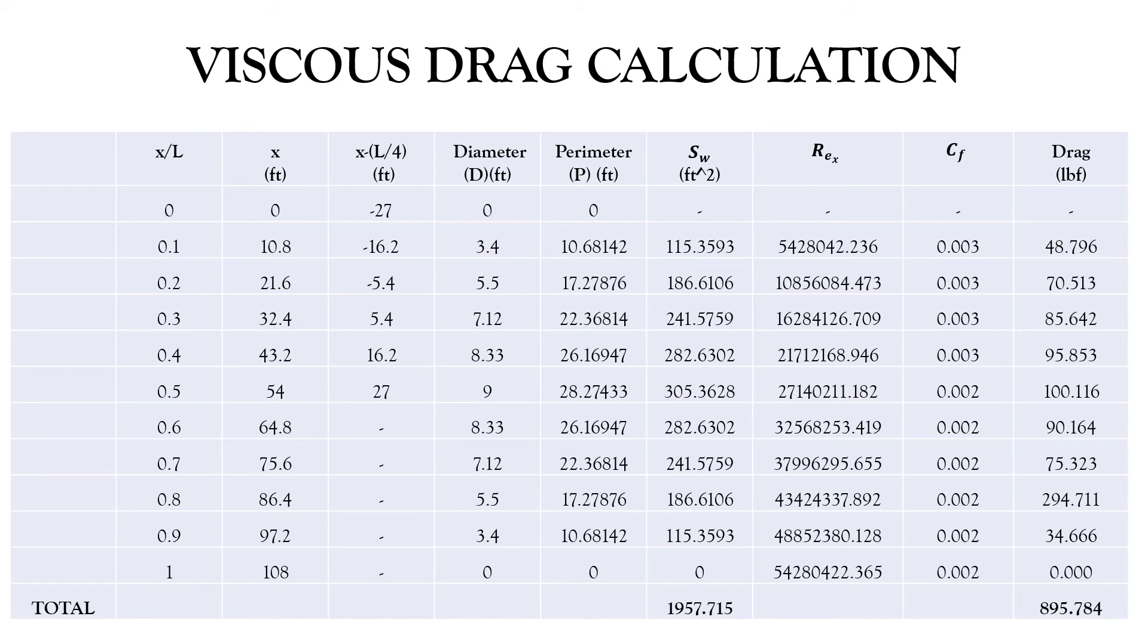Here in the table, we show the viscous drag calculation. As you can see, x by L, the first column, we are having a 10% increase and in the second column, the L. You can see the last digit of 108. That is the length of the fuselage and from start to end, the complete fuselage has been divided into 10 parts.